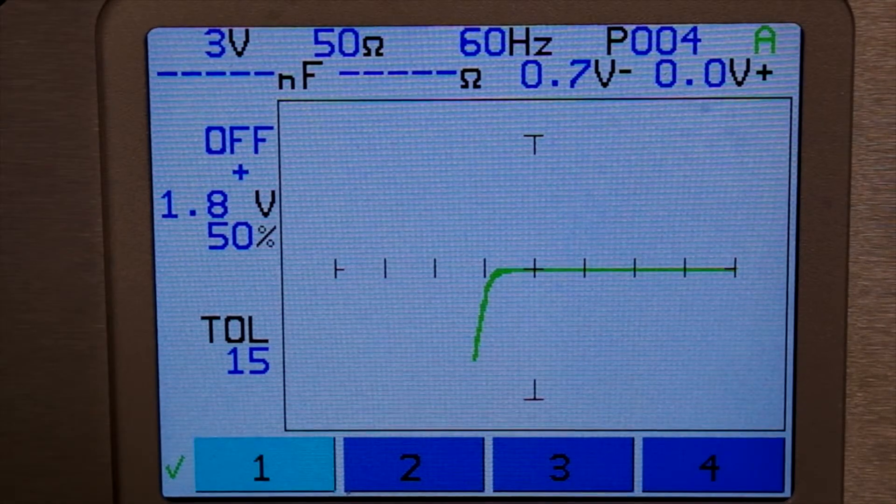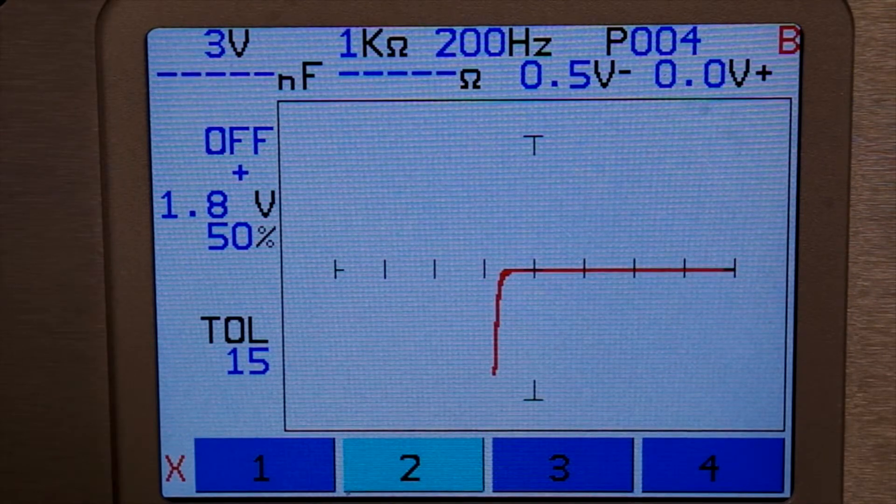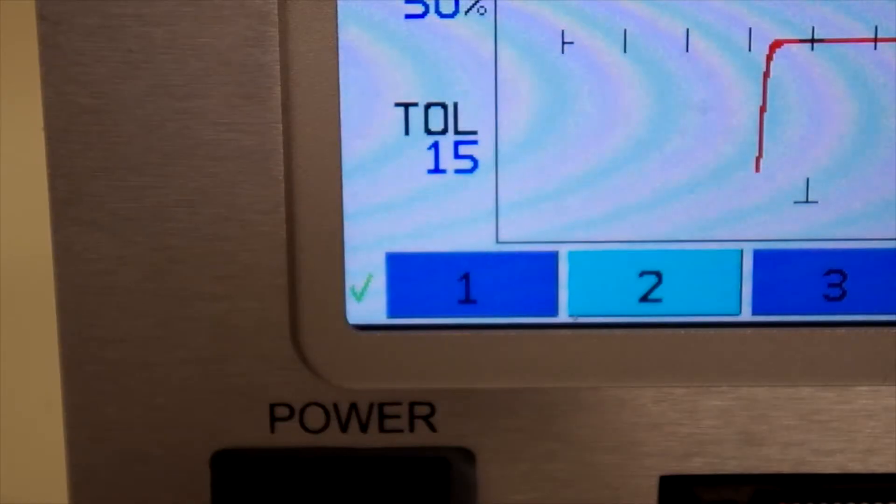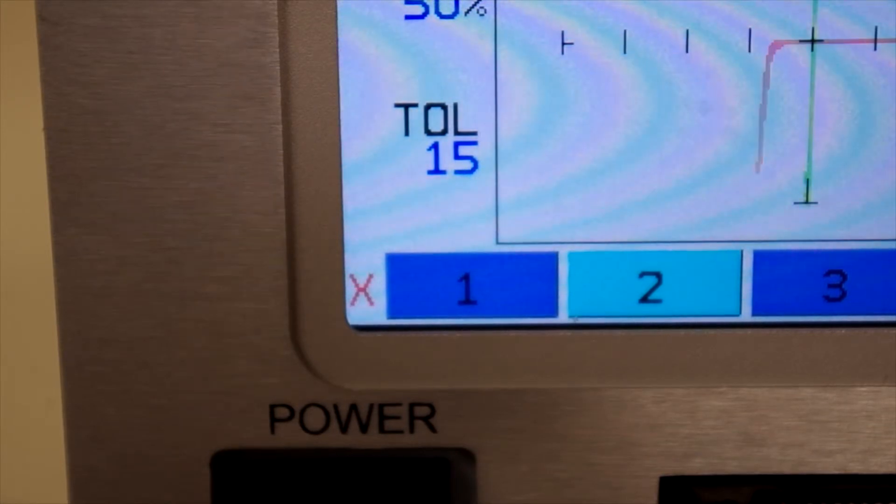You can configure the tracker to stop on failures and provide an audible tone if needed. A green check mark in the bottom left indicates a comparison passes and a red X indicates a failed comparison.